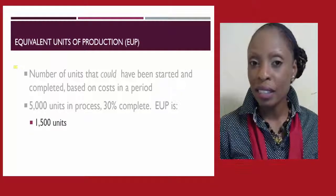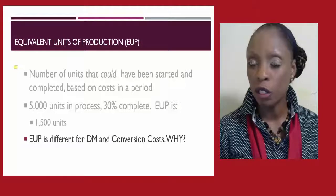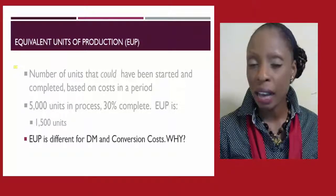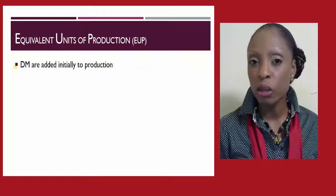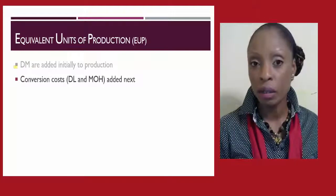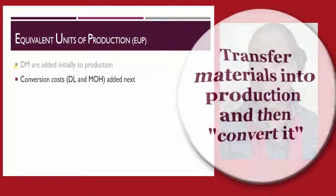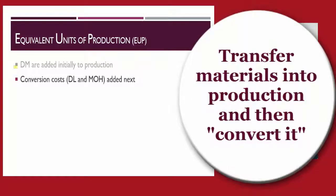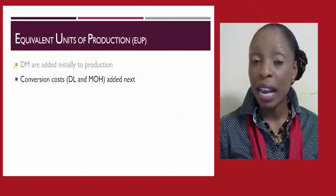It is important to note that the equivalent units of production may differ for direct materials and conversion costs. Direct materials are typically transferred into production prior to conversion costs. As a reminder, conversion costs consist of direct labor and manufacturing overhead. So typically, the amount completed based on both of these elements would differ. There are two approaches used to compute the equivalent units of production: the weighted average and FIFO.